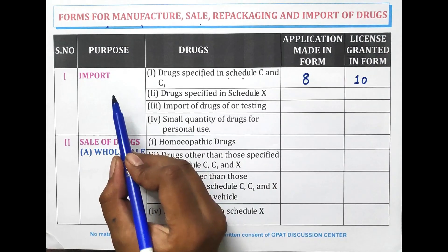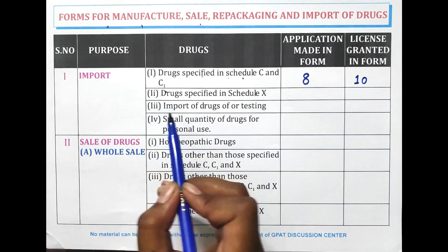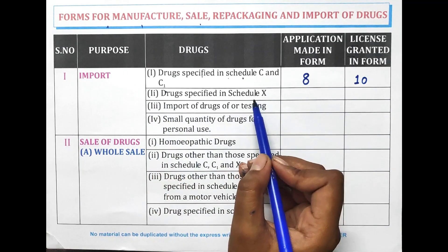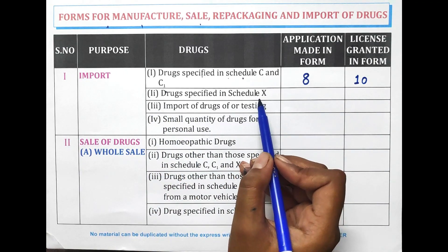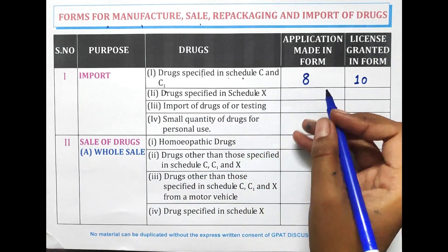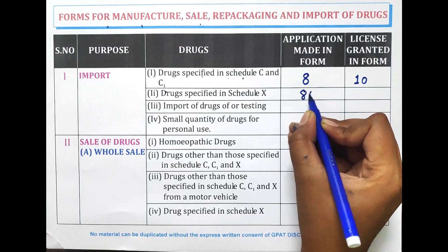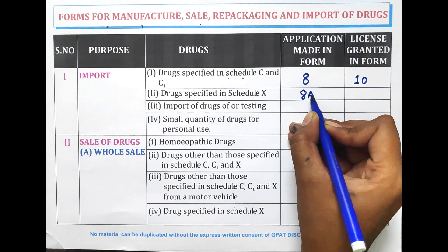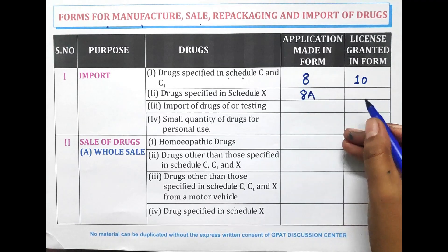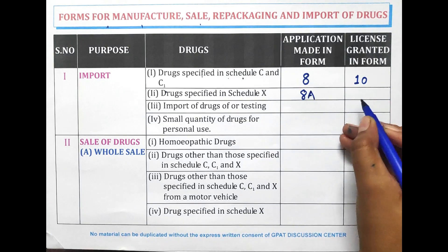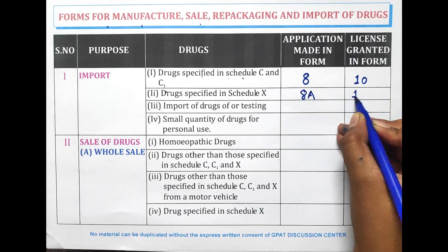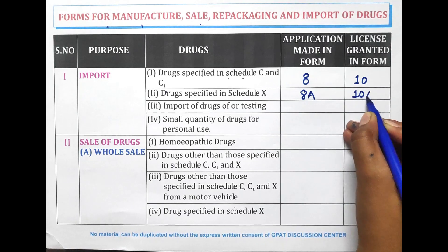For importing drugs which are specified in Schedule X, we have to file the application made in Form 8A and the license is granted in Form 10A.